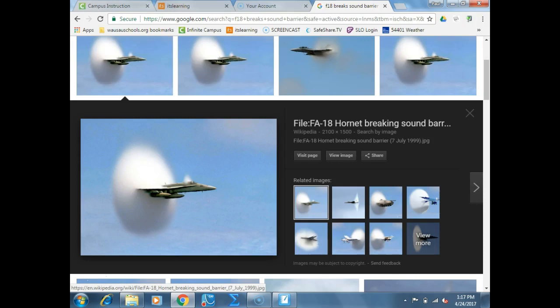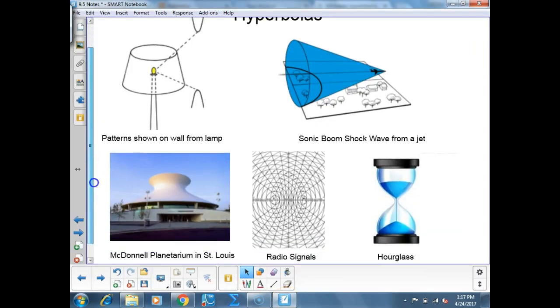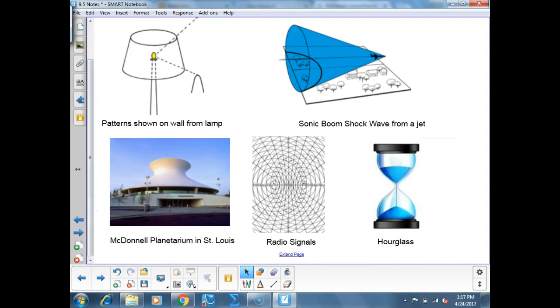With the F-18, you get a sonic boom off of the cockpit and you get one off of the tail. There's a planetarium in St. Louis in the shape of a hyperbola. Radio signals use hyperbolas a lot. In an hourglass, in an hourglass.